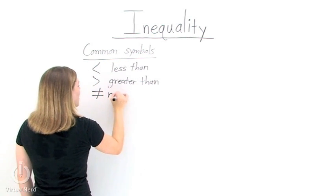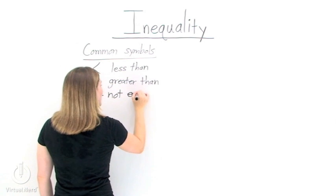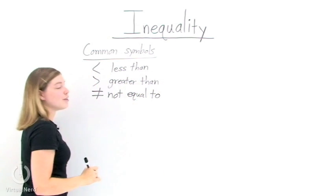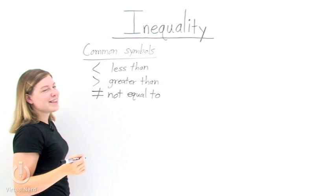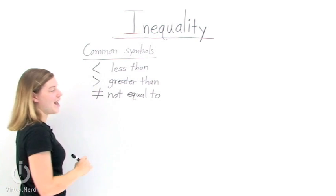Third, we have not equal to. It means exactly what it sounds like. The two values simply aren't equal. I like this one because it's just an equal sign with a diagonal line through it.